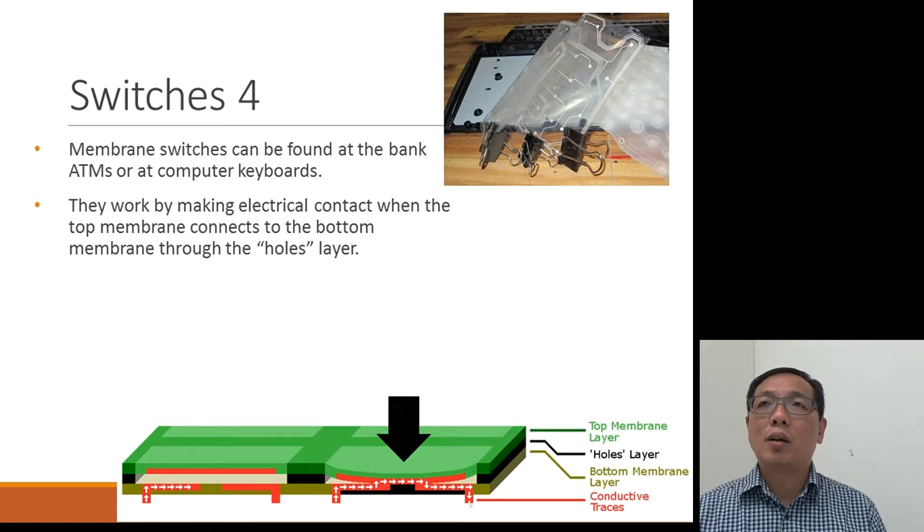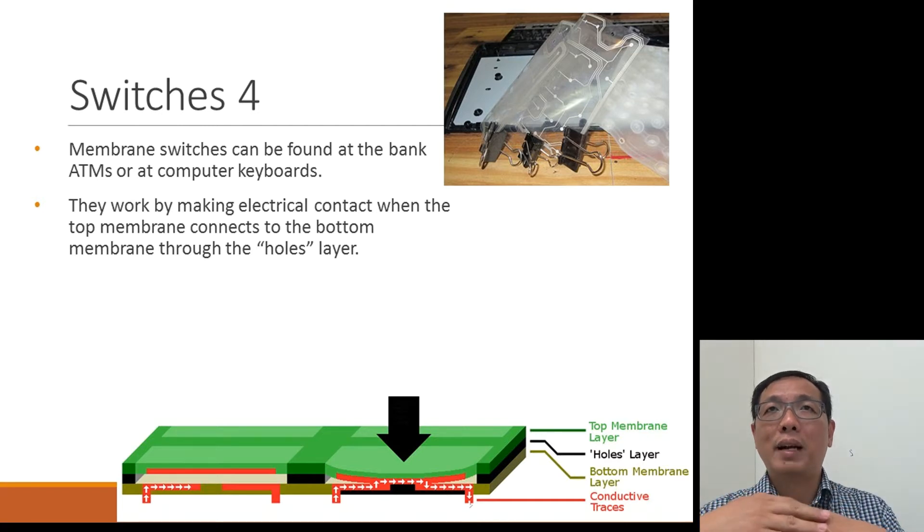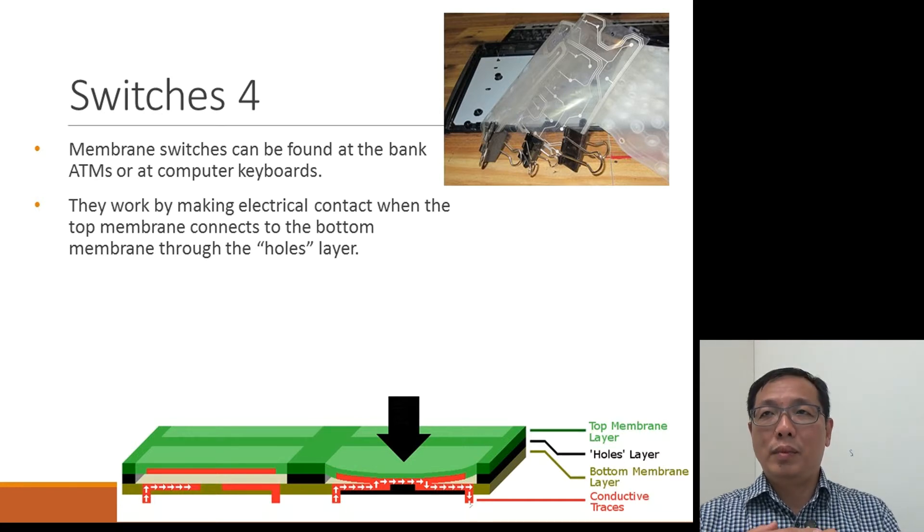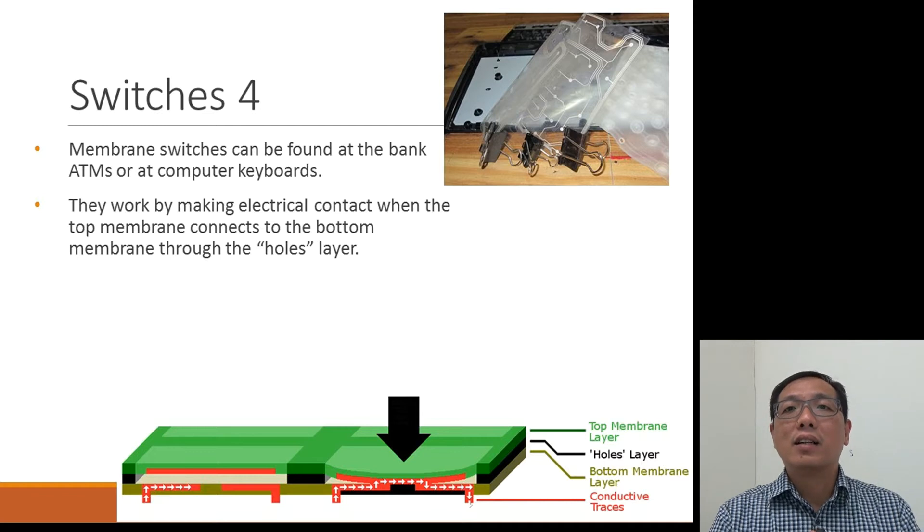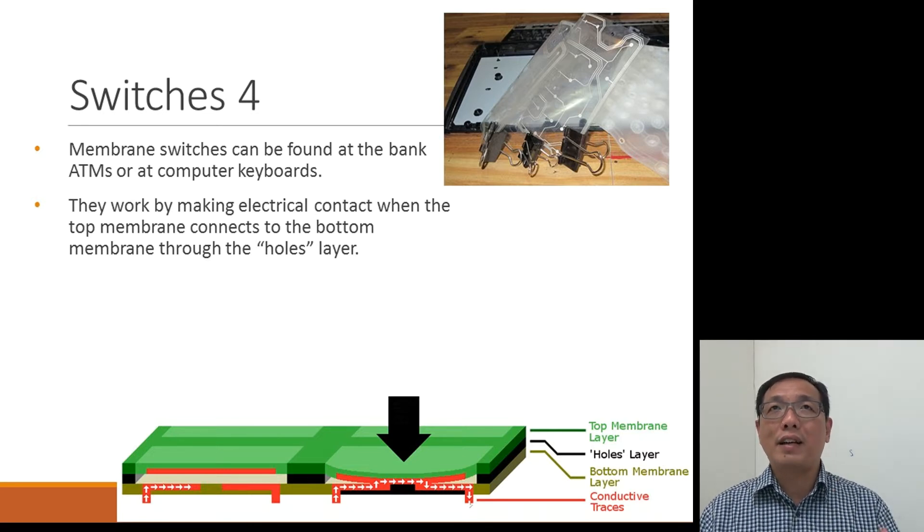On the bottom of the top membrane layer, there's also the conductive traces. So in between, normally there are two gaps and they are not pressed, so there's no contact. But when you press the top, the conductive traces at the top layer will come down and come in contact with the bottom layer, the conductive traces and therefore may have a contact. And therefore you know that there is a contact and therefore the switch is closed. So this is the way you can tell the membrane switches works. Very effective.